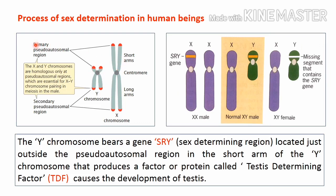The long arm of both the X and Y chromosomes shows another homology called the secondary pseudo-autosomal region. A normal X and a normal Y chromosome together represent a normal male genotype. Sometimes, if a part of the Y chromosome — specifically the SRY, the sex determining region — is located on the X chromosome, that XX genotype develops into a male, called an XX male.